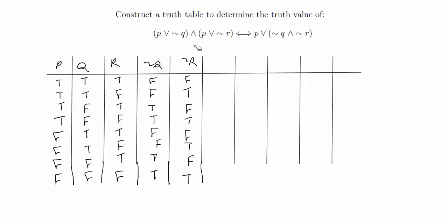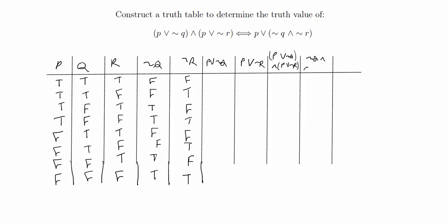Now we have all the individual letters. Next, we can group letters. We're going to have P∨¬Q and P∨¬R as the next columns, followed by ¬Q∧¬R, and then P∨(¬Q∧¬R). We're basically working left to right, building up to get each full statement in its entirety.